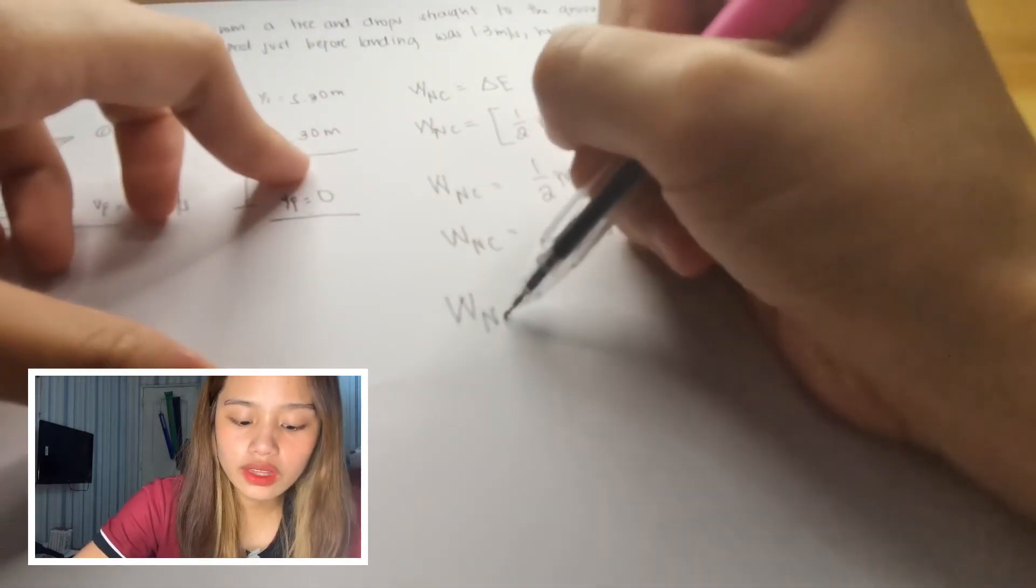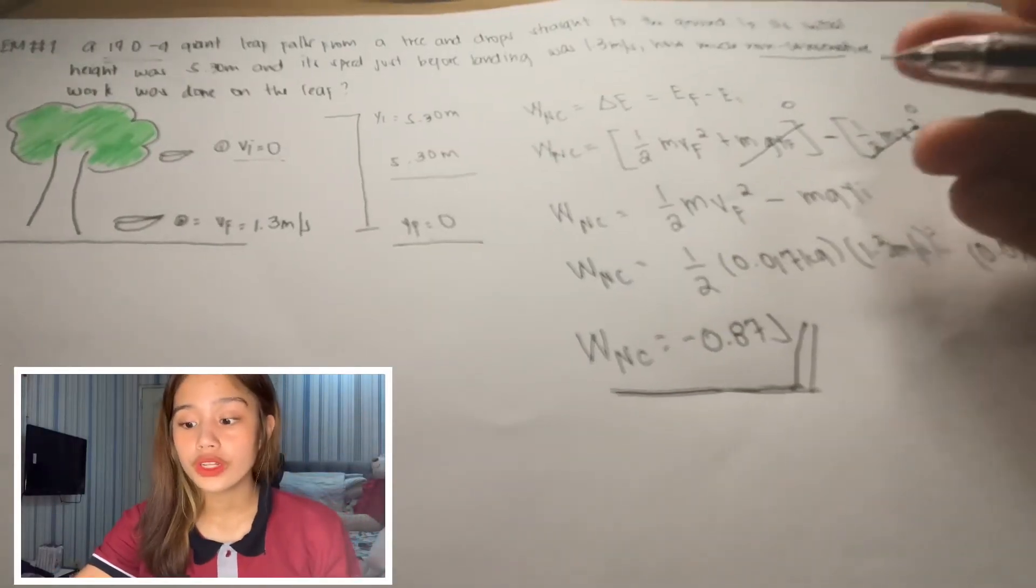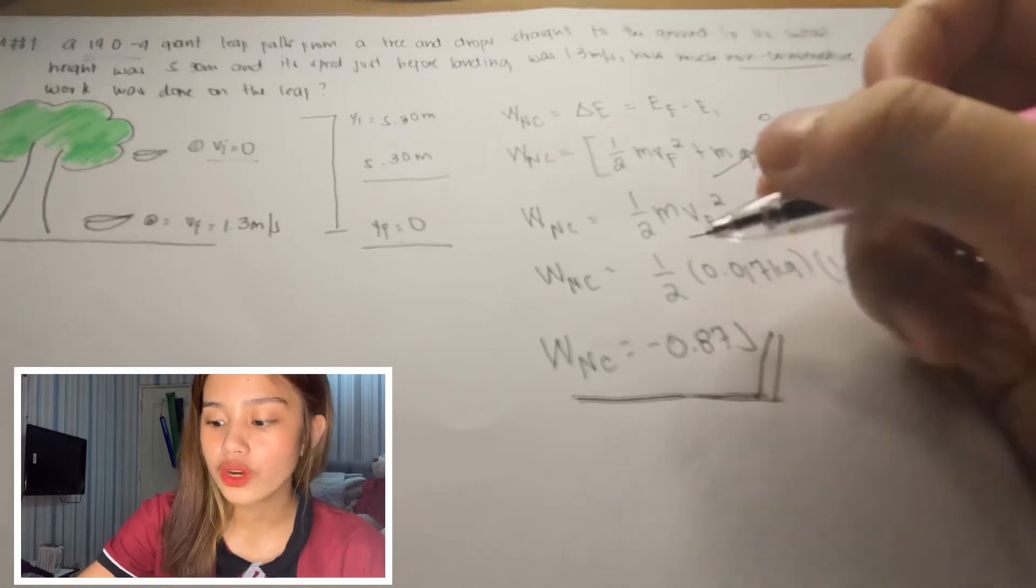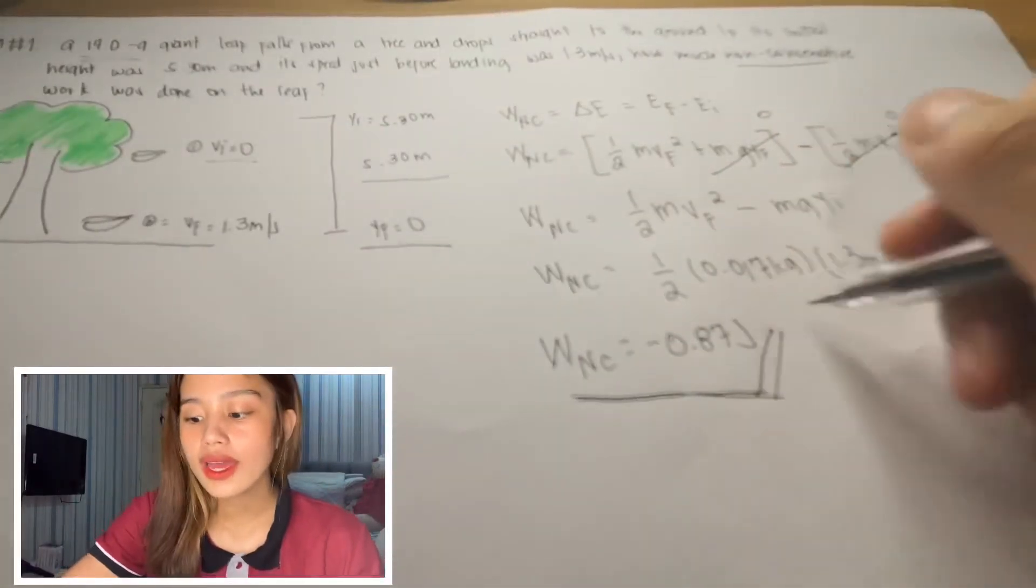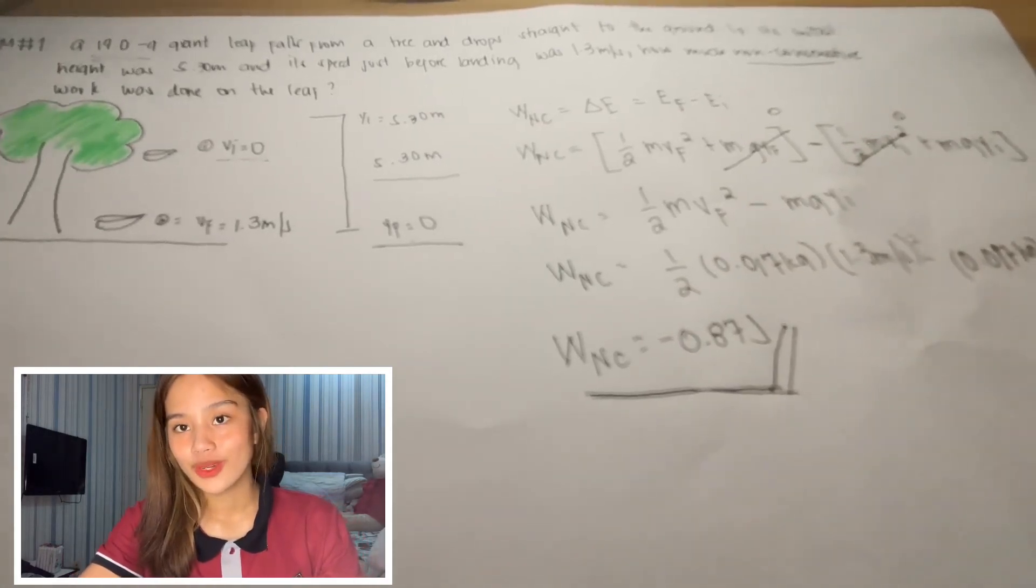So calculating the values. So the total work done by non-conservative force on the leaf, calculating the values, is equal to negative 0.87 joule.